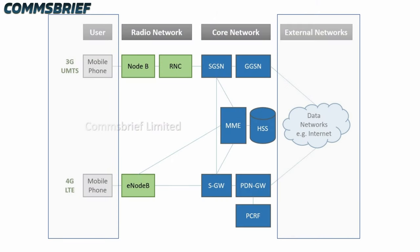Femto cells or any other cells — macro cells, micro cells, pico cells, etc. — all of these cells are part of the radio network. All they do is create the network coverage so that your phone can connect to the radio network, and then the radio network is connected to the core network of a mobile network.